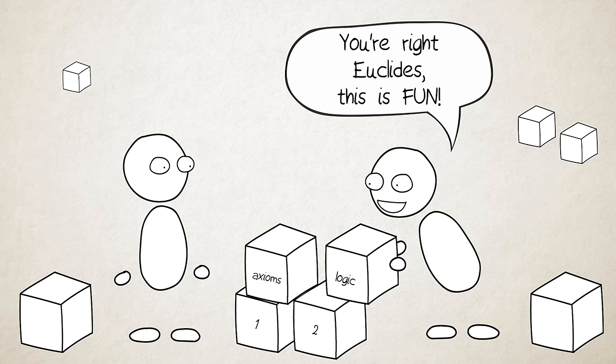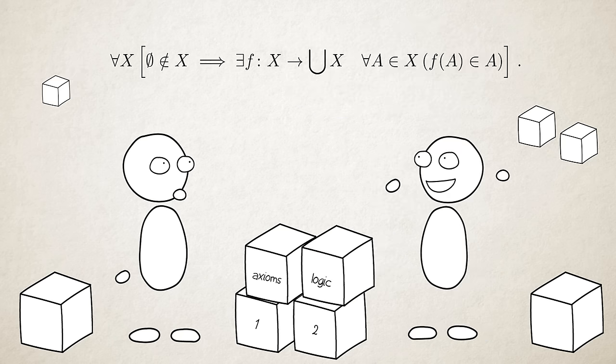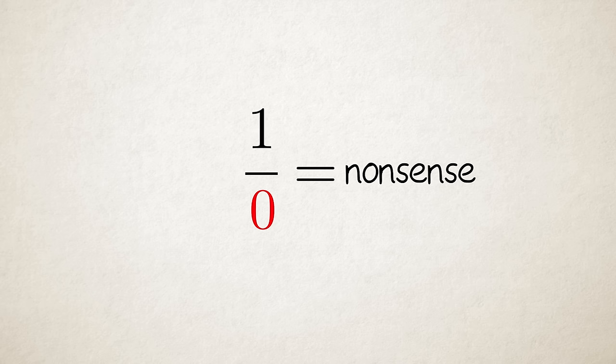See, when we built mathematics we decided the rules and according to those rules this equation doesn't make any sense. It has no answer. So what's the problem?